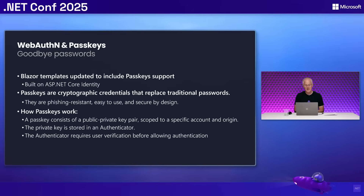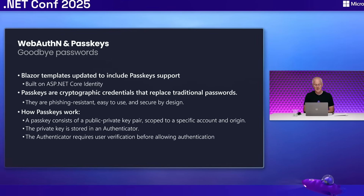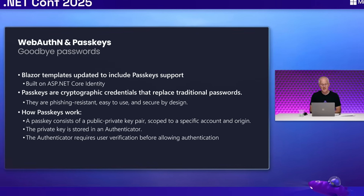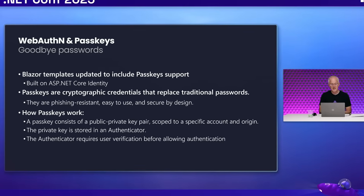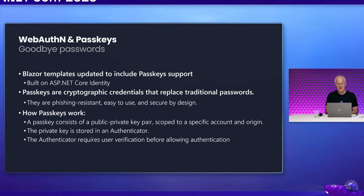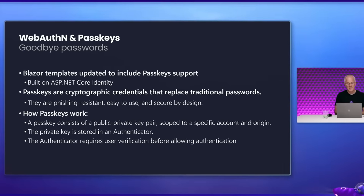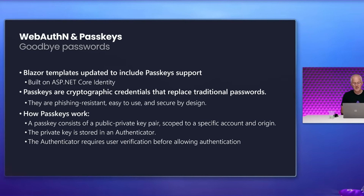As with every iteration of .NET, we get better performance, and it's especially true when it comes to ASP.NET Core, the web application framework. We receive better performance across the board for minimal APIs, Blazor, SignalR, and every other part of the ASP.NET Core framework. The new support for WebAuthn and passkeys stands out. If you want to know what it is and how it works, I highly recommend watching the demo from Daniel Roth titled 'Build Better Web Apps with Blazor in .NET 10', linked in the video description.